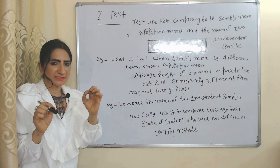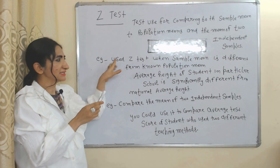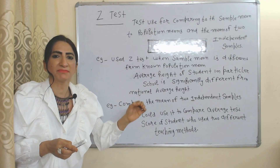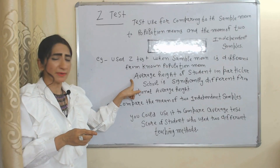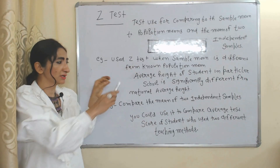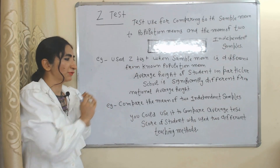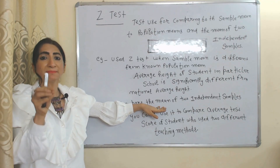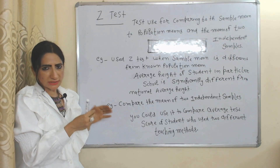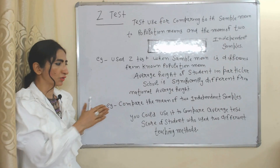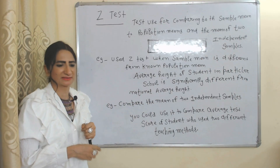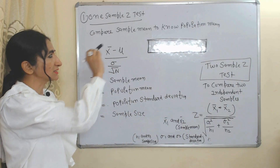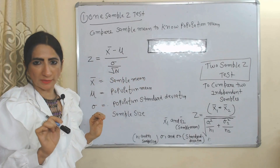Z test: we mainly use the Z test in two cases. First, we use the Z test when the sample mean is different from the population mean — for example, to know if the average height of students in a particular school is significantly different from the national average height. In the second case, we use Z test to compare the means of two independent samples — for example, to compare average test scores of students using two different teaching methods.